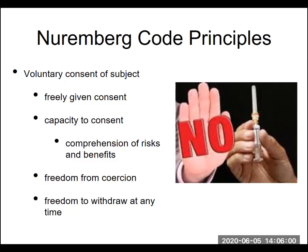The final thing associated with voluntary consent in the Nuremberg Code is that the subject must have the ability to freely withdraw at any time. They may have given voluntary consent, learned about the risks and benefits, but going forward find it too burdensome, or the medication isn't making them feel better, or they simply change their mind. They don't have to give a reason — they must be able to freely withdraw. As you can see, if subjects are prisoners or vulnerable populations who don't understand what's going on or lack autonomy over their actions, this can be violated very easily — as happened in Nazi Germany and in other situations discussed in the last class.